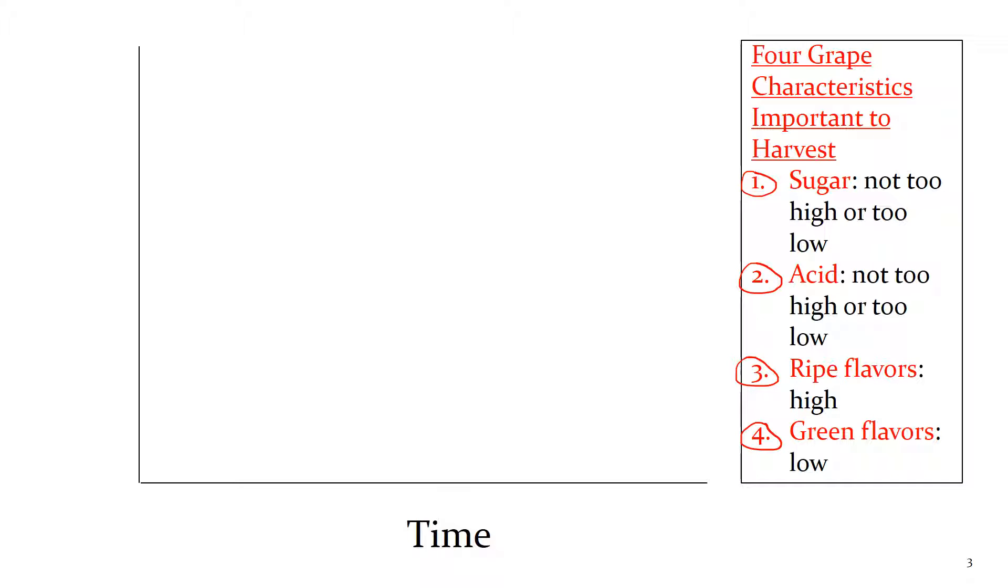So if you look here on this little chart, on the horizontal axis I have time. If you think about what happens as grapes ripen, over time, as grapes are ripening, you're going to have sugar increasing. While sugar is increasing, you're also going to have ripe flavors increasing. And this makes sense. It's like ripening any fruit. As it gets ripe, you have an increased level of ripe flavors.